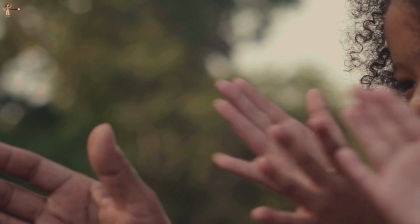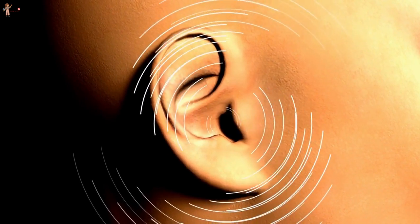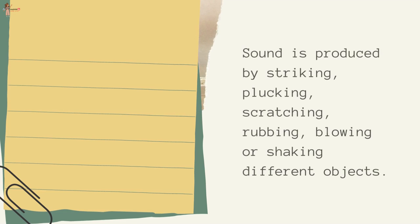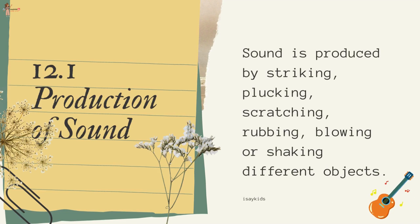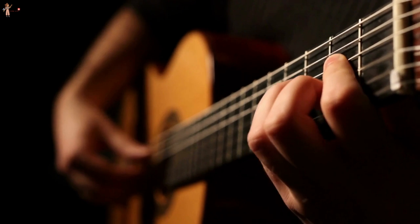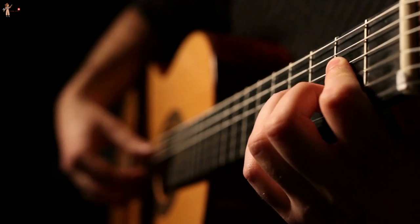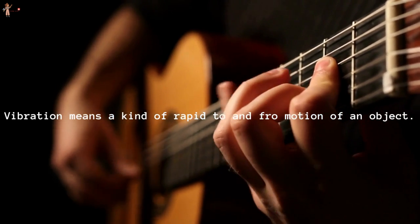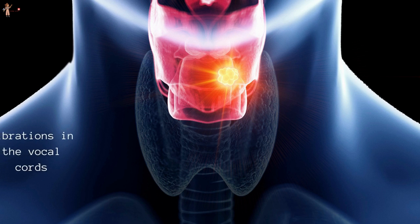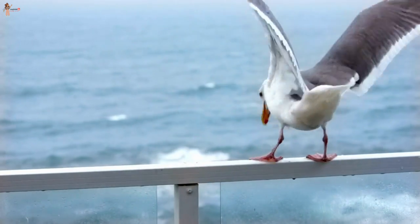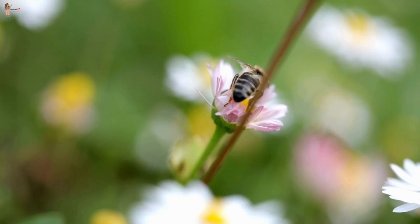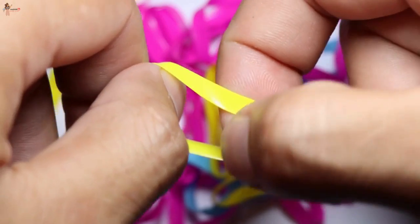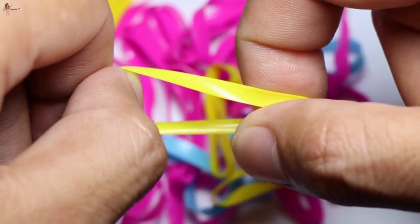We can just change energy from one form to another. When you clap, a sound is produced. Can you produce sound without utilizing your energy? In this chapter we are going to learn how sound is produced and how it is transmitted through a medium and received by ears. Sound is produced by striking, plucking, scratching, rubbing, blowing, or shaking different objects — by doing this we set the objects vibrating and produce sound. Vibration means a kind of rapid to-and-fro motion of an object. The sound of the human voice is produced due to vibrations in the vocal chords. A stretched rubber band when plucked vibrates and produces sound.